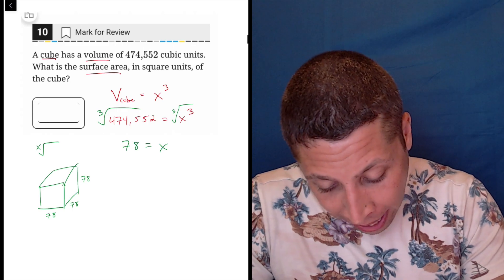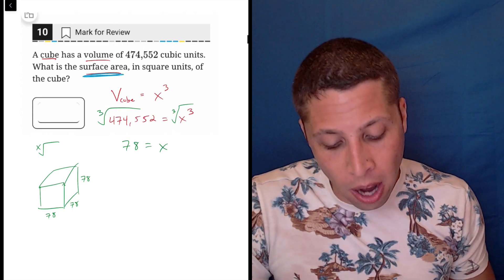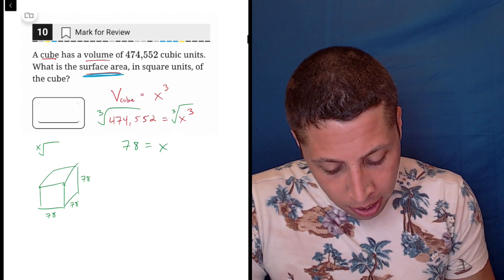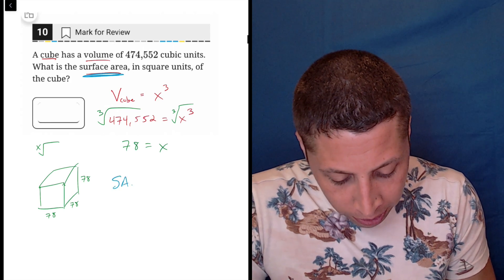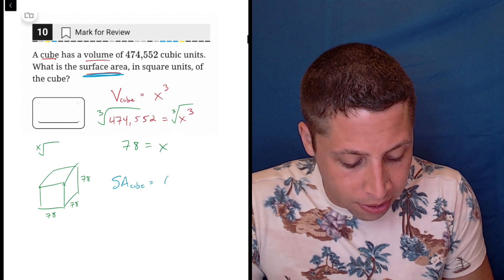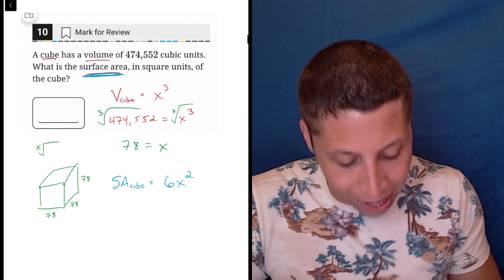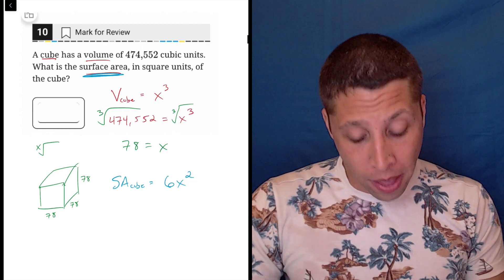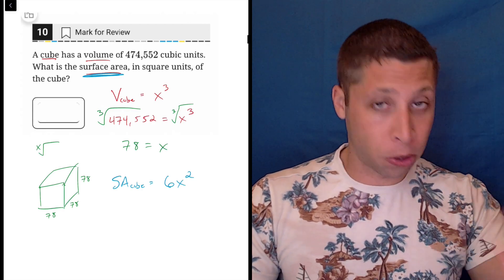Now though we're being asked for the surface area, and here's another formula you might want to memorize: the surface area of a cube is 6x squared. Now let's think about why that is. This might be easier to memorize if you understand where it comes from.